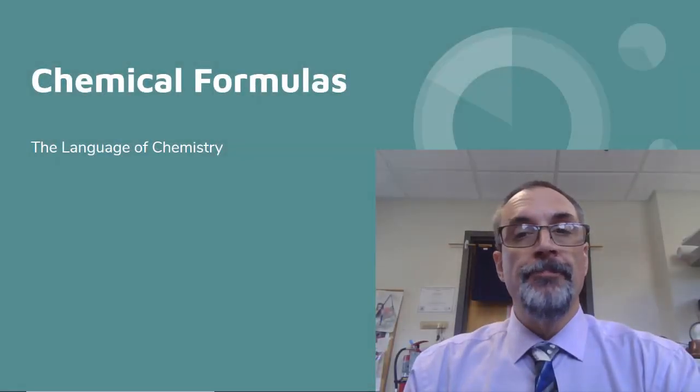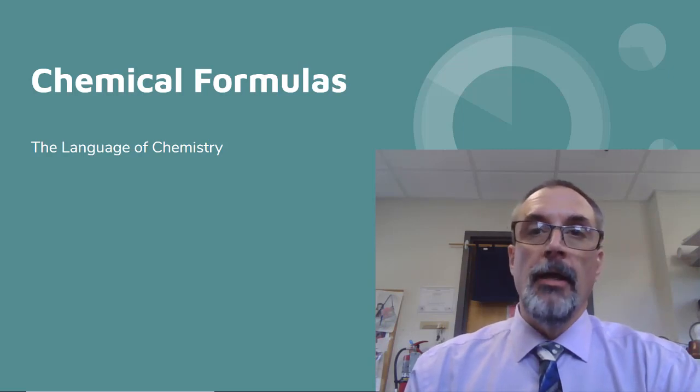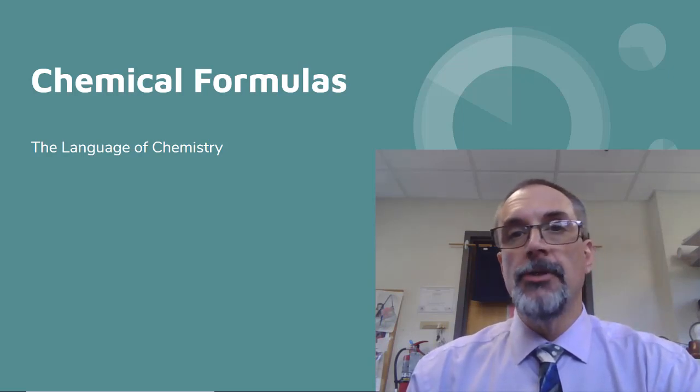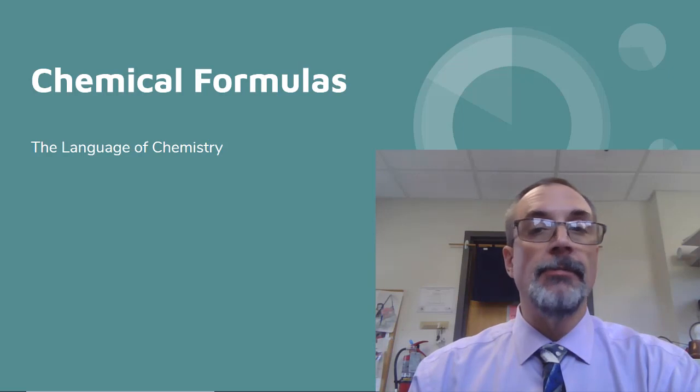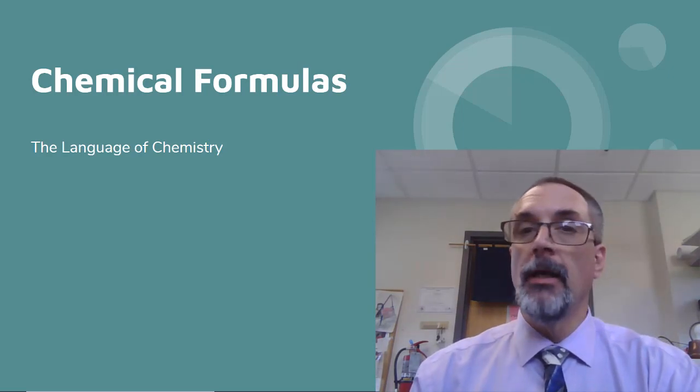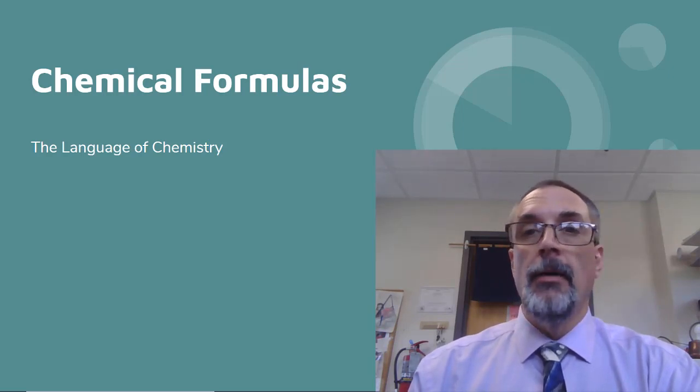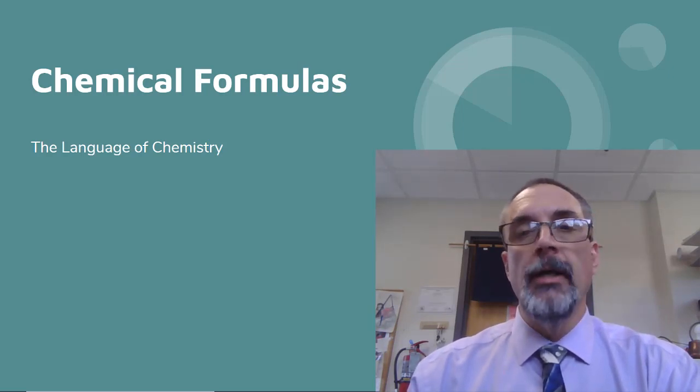Let's talk about chemical formulas. Chemical formulas are sort of the language of chemistry. They are a way for chemists to represent certain types of substances in a more universal way so that everybody can understand them, because not everybody speaks English, and also in a much simpler way.